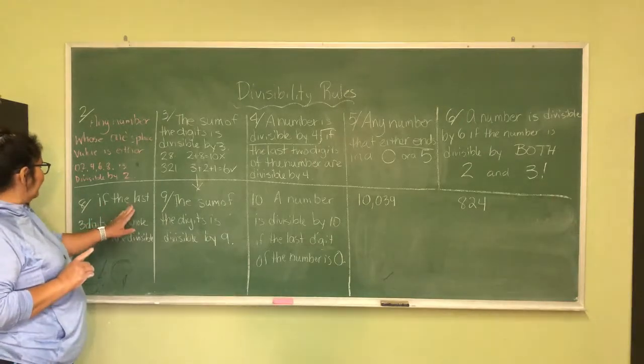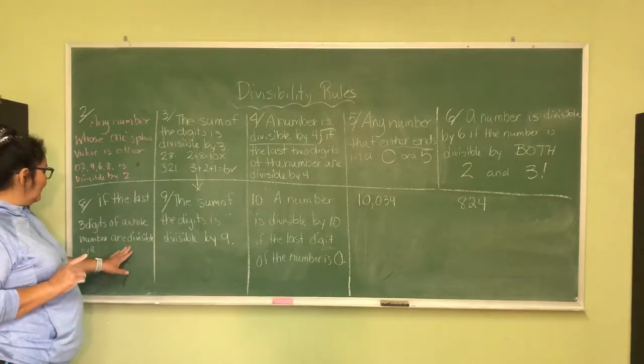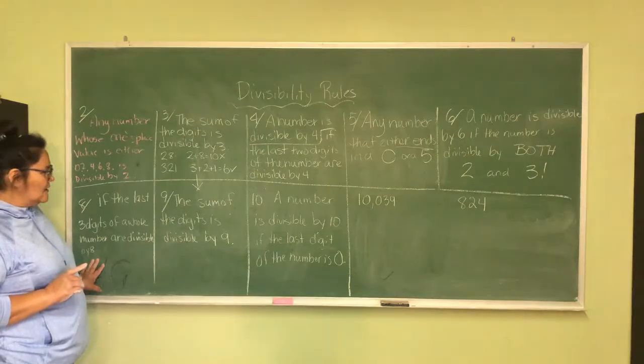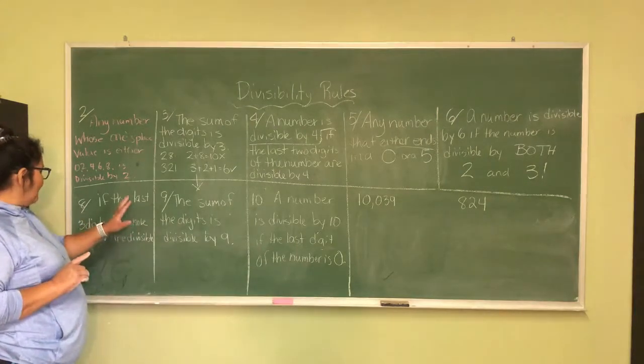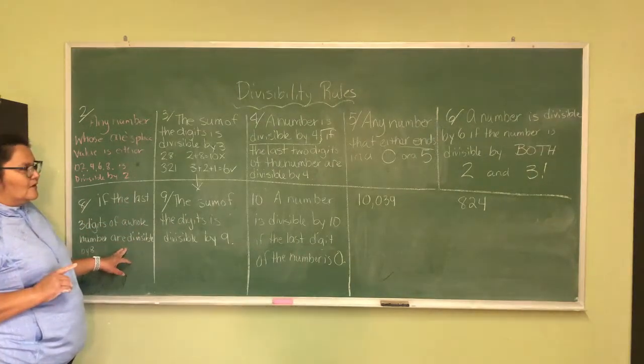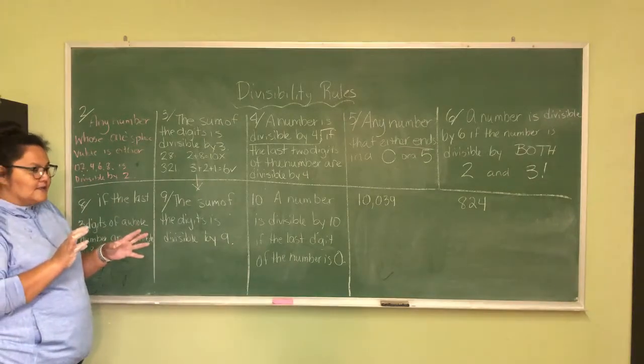So, but the rule is, if the last three digits of the whole number are divisible by 8, if the last three digits of a whole number, then the whole number is divisible by 8.